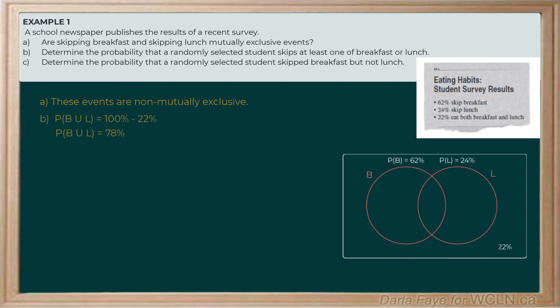If we take 100% of students and subtract the 22% that eat both breakfast and lunch, that tells us that 78% of them skip at least one of breakfast or lunch or both, because we know these are non-mutually exclusive events.